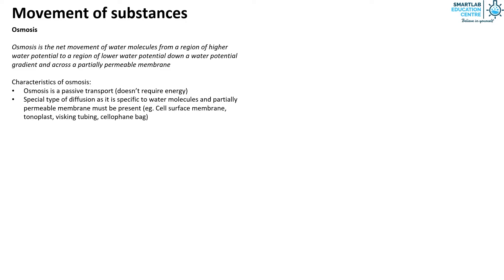Examples of partially permeable membrane include cell surface membrane, tonoplast, visking tubing, and cellophane bag. Substances that can pass through partially permeable membrane are water and gases.